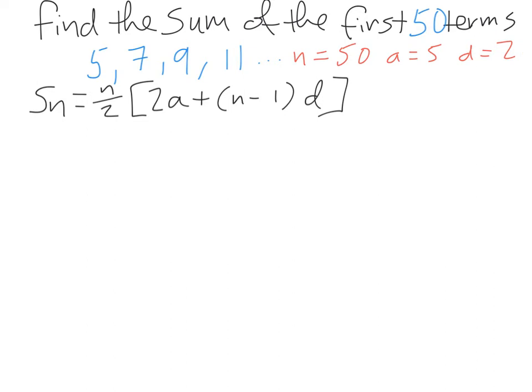So whenever we're doing any substitution, the best thing to do is to write out the formula as you see it and replace every letter with a set of brackets. So the n gets swapped for 50, and then the other n is here as well. The a gets swapped for 5, because 5 was the first term. And the d gets swapped for 2, because the common difference between each term was 2. Once we've substituted all our values into our formula, then we just have to start working it out.